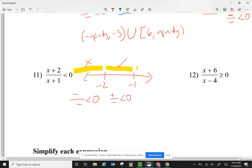Let's check the last section. Any number bigger than negative 1. I'm thinking 0. 0 plus 2? That's positive. 0 plus 1? That's positive. Is positive divided by positive less than 0? No.